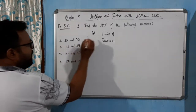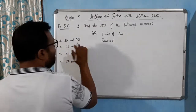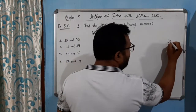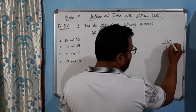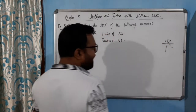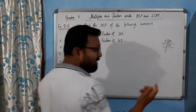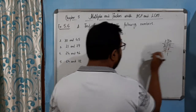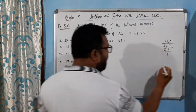Now for example 2: factors of 30 and factors of 45. For 30: the units digit is 0 so it is divisible by 2, giving 15. Then 1 + 5 = 6, which is a multiple of 3, so divide by 3 to get 5. Therefore 30 = 2 × 3 × 5.